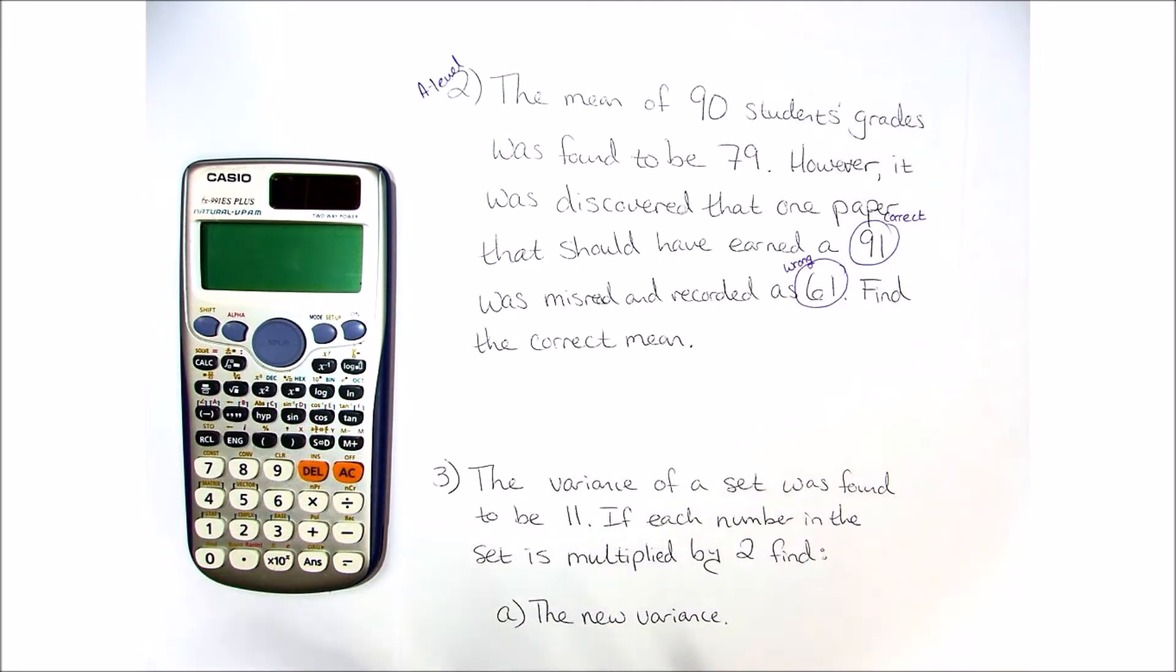We want to find the corrected mean. Now in order to do that, we're going to look at a few things. First, we need to actually get the total.